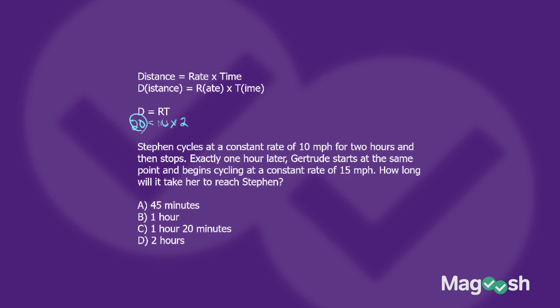Now if we look at Gertrude we can do the same math, but she's going faster and the question is how long will it take her? We have the distance she needs to cover — 20 miles — and her speed, which is 15 miles per hour, but we don't know T yet. That's what the question is asking for, but we can plug this information back into that original equation. We use it twice: once for Steven to find how far he went, then we plug that 20 into Gertrude's equation: 20 equals 15 times T.